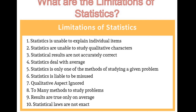The last limitation: statistical laws are not exact. Statistical laws are not exact as in the case of natural sciences. These laws are true only on average; they hold good under certain conditions and cannot be universally applied, so statistics have less practical utility. These are the scope and limitations of statistics, which are very important, and we also learned about the importance of statistics.